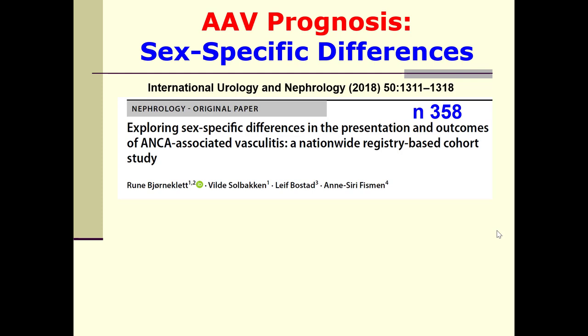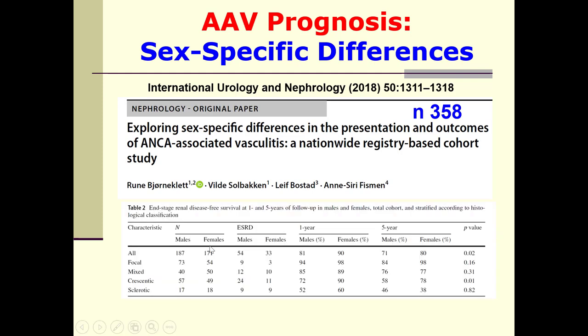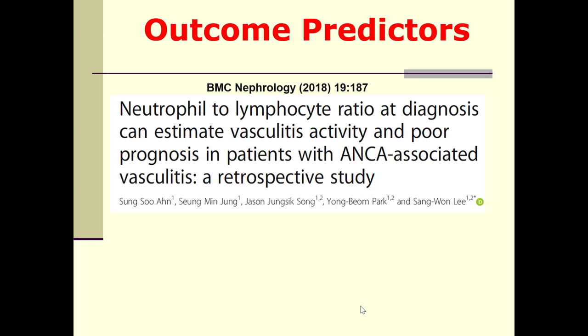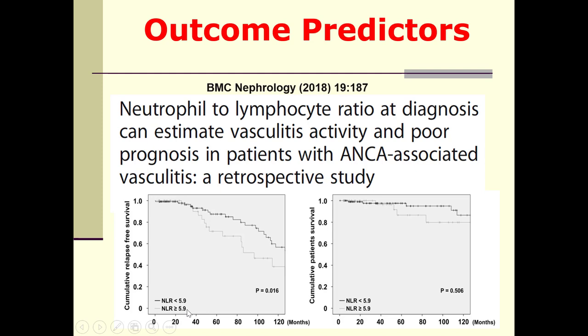Another issue is gender difference. This study of 358 cases showed that across different pathological types — focal, mixed, crescentic, sclerotic — outcomes are consistently worse in males compared to females. Urine analysis is also valuable: persistent hematuria rather than proteinuria was associated with increased risk of relapse. Even the simple neutrophil-to-lymphocyte ratio can estimate vasculitis activity and poor prognosis. If the ratio is higher than 5.9, relapse-free survival is reduced and relapse is more common, though overall patient survival was not significantly affected.